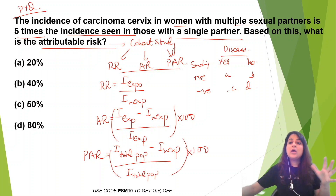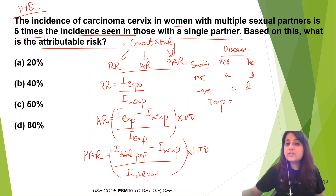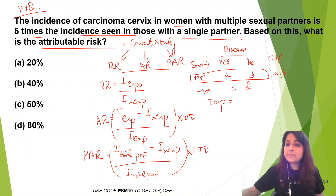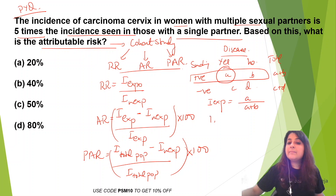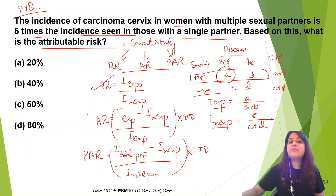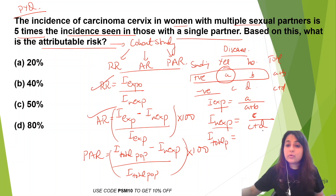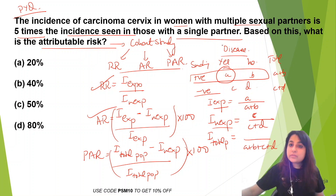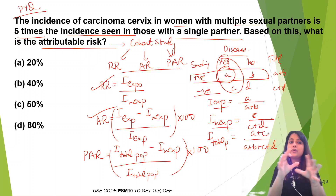Now, what is incidence among exposed? Those who are smoking is A+B, so total exposed = A+B, and disease cases among exposed = A. Non-exposed is C+D — those not exposed to smoking — and lung cancer cases among them = C. For total population: A+B+C+D, and total disease incidence = A+C. This was just a revision of all three formulas.